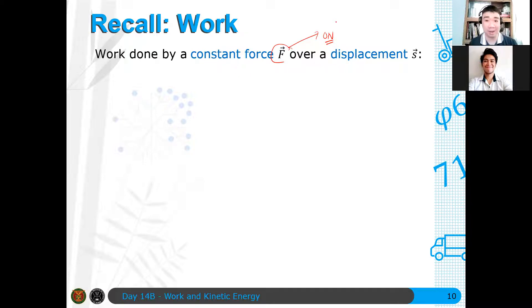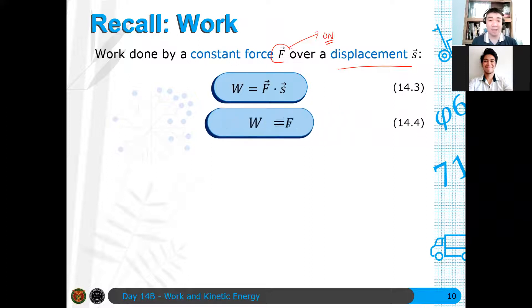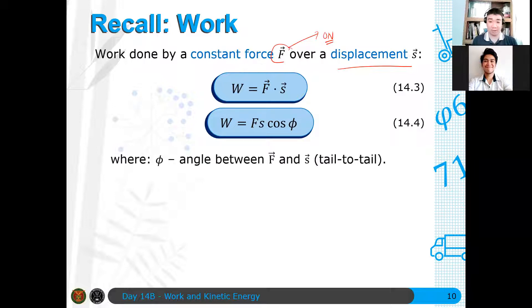Or if φ is the angle between the force vector and the displacement vector, this is Fs cosine φ given by equation 14.4. Again, φ is the angle between F and S. Remember, when you define two vectors, if this is the F vector, the force vector, and this is the displacement vector, it's from tail to tail. So this is that angle here.